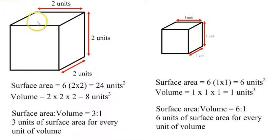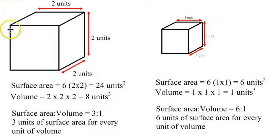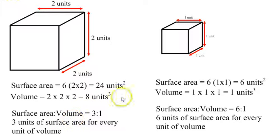Here's how this works. All the stuff that gets into and out of the cell has to go through the cell wall or cell membrane, so the outside of the cell is the doorway into the cell. For a cell two units by two units by two units, the surface area is 24 units squared and the volume is 8 units cubed, giving a 3-to-1 ratio of surface area to volume.